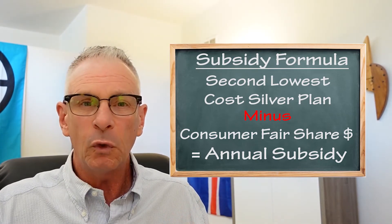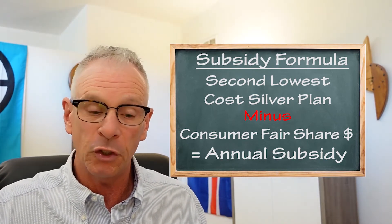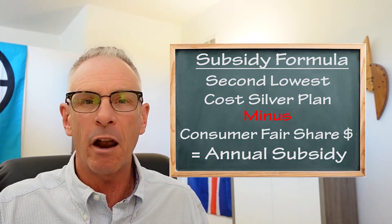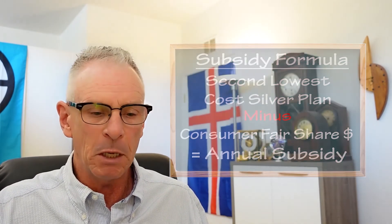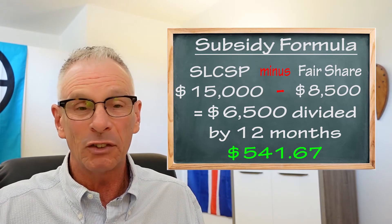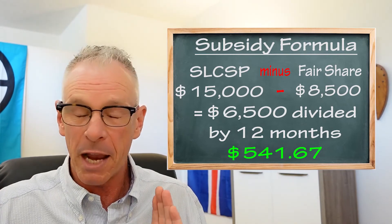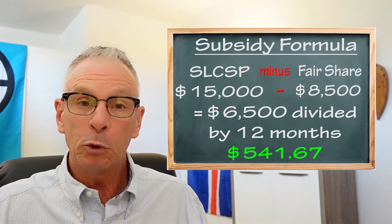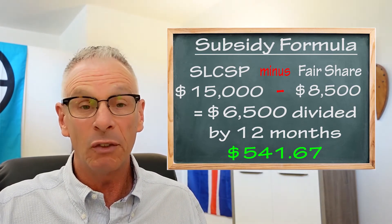So we have the full annual amount of the second lowest cost silver plan, and we subtract the consumer fair share that we just determined — and that's the annual subsidy. They call it the premium tax credit on the IRS side; when it's paid out in monthly payments through the exchange, it's the advanced premium tax credit. Going back to our numbers, let's say the second lowest cost silver plan for this household is $15,000. We take 15,000 minus $8,500 and we are left with $6,500. That's the subsidy amount.